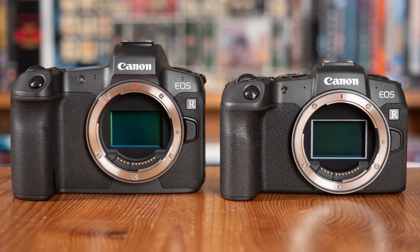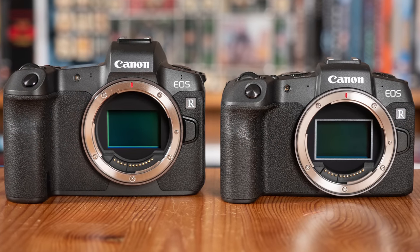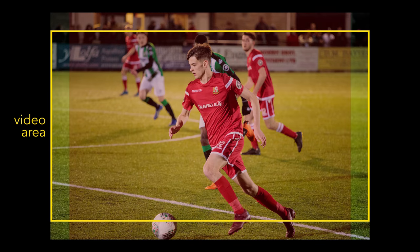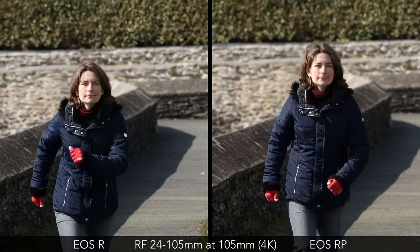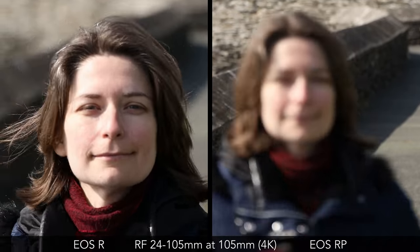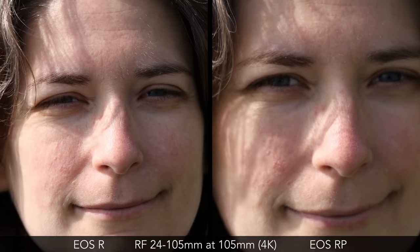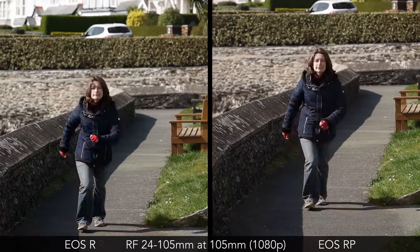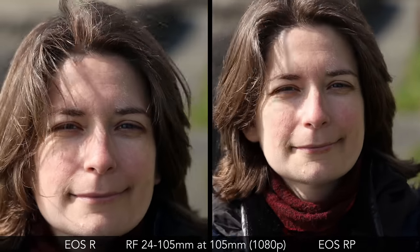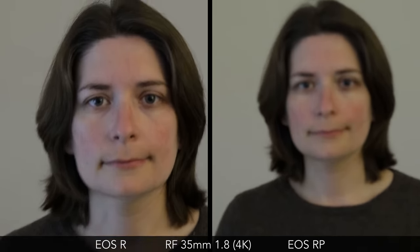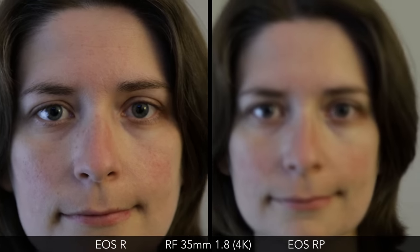Both cameras feature Canon's face detection system called Dual Pixel CMOS AF, which is very fast and precise for both stills and video. Here we come across perhaps the most important difference between these two cameras. When recording 4K, the EOS RP relies on contrast detection rather than phase detection, and as you can see it is much slower as a result. This is really a shame because in Full HD, where both cameras use Dual Pixel CMOS AF, they are very quick at changing focus. With face detection, Dual Pixel CMOS AF makes the EOS R much quicker in 4K once again.